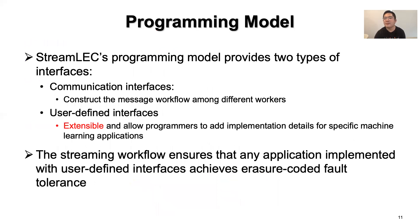StreamLake's programming model provides two types of interfaces: communication and user-defined interfaces. The communication interface constructs the streaming workflow amongst different workers. StreamLake also defines a set of extensible user-defined interfaces, which allow programmers to add implementation details for specific machine learning applications. The streaming workflow guarantees that any application implemented with these user-defined interfaces can enable erasure coding for fault tolerance.